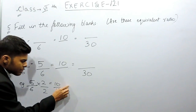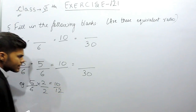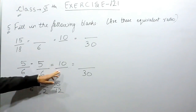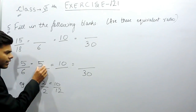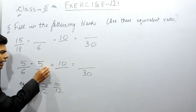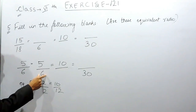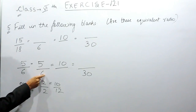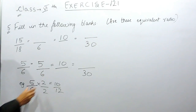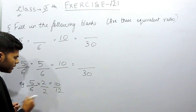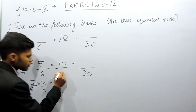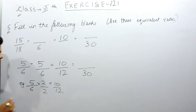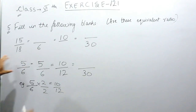Two five times ten, and two six times twelve. So here also we'll do the same thing — we have to make this five into ten, so we'll multiply it with two. Similarly, in the denominator we'll multiply this six with two, so this will be twelve.